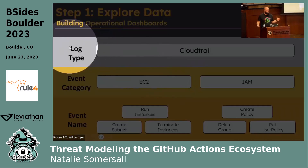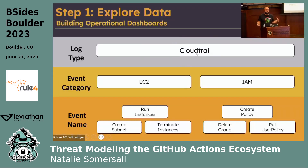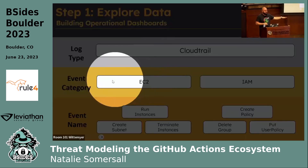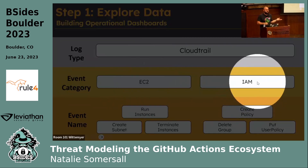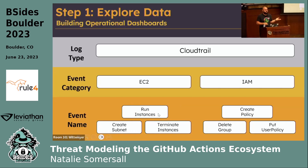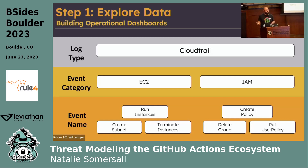What you're going to find is that most logs have a tiered or hierarchical structure. At the top you have log types — in this case CloudTrail. Underneath that they're broken up into event categories or event sources, like individual services: EC2, IAM. And then underneath that you have event names. Figure out that structure for your logs, whether it's GitHub, Okta, Windows, or AWS. Learn that structure — it's generally how I build out my dashboards.